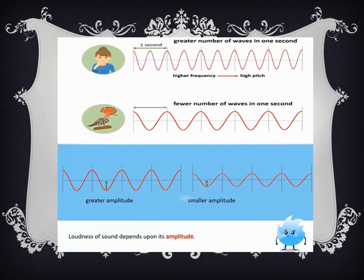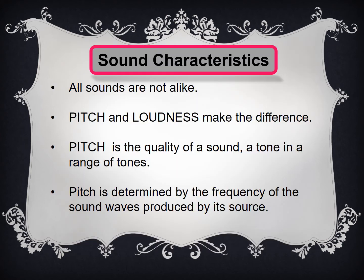From these pictures you can see the difference between frequency and intensity easily. A greater number of waves in one second shows higher frequency, and fewer waves in one second gives lower frequency. When talking about amplitude or intensity, the loudness of sound depends upon its amplitude. Pitch is determined by the frequency of the sound waves produced by the source.